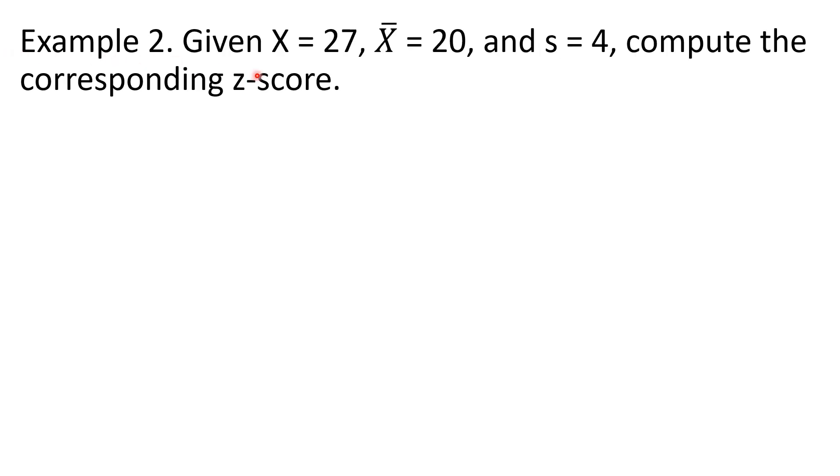Example 2, given the score or x equals 27, sample mean equals 20, and sample standard deviation equals 4. Compute the corresponding Z-score. Of the two formulas for Z-score, we are going to use the formula given samples.